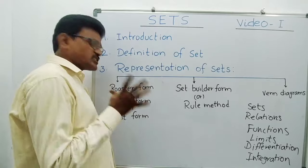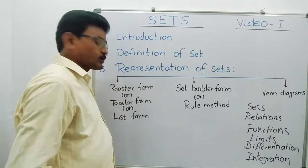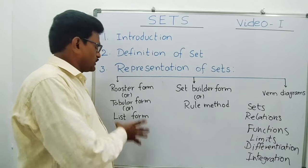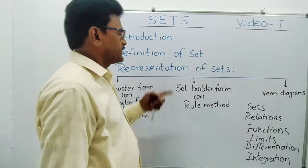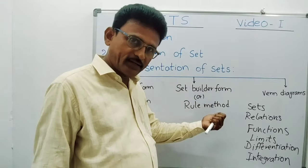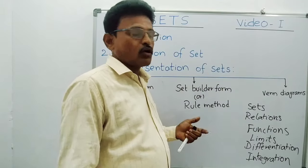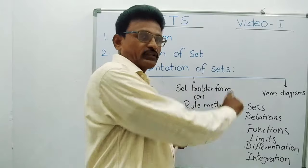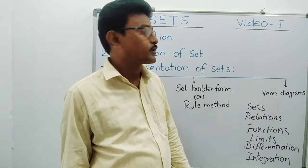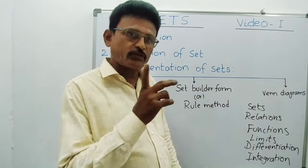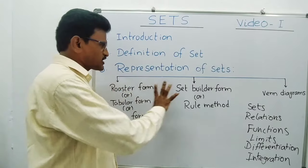Generally everybody knows about Roster form and Set Builder form only. Roster form or Tabular form is also called List form — here we can get all elements of any set. Set Builder form is also called Rule method — here they don't give the elements directly in the set, but they give the rule which the elements are following. After that, Venn diagrams — sets can be represented by Venn diagrams also. I will explain Venn diagrams in detail in a separate video. Today I am going to give clear information about Roster form and Set Builder form, and how to convert one into the other.